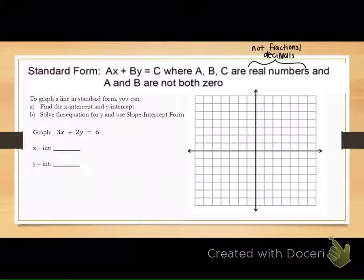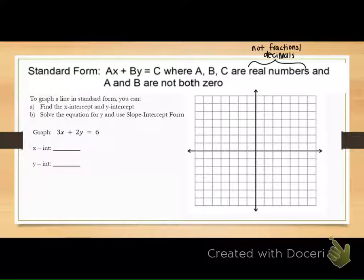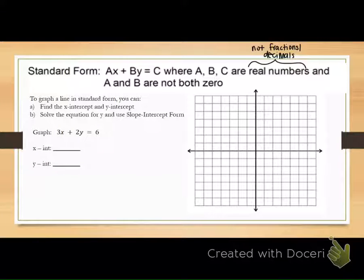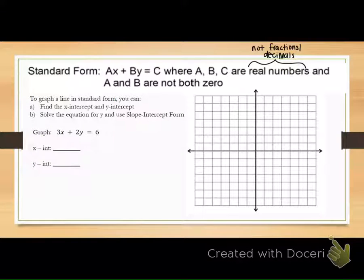So, graphing from standard form. If you are in ax plus by equals c form, here's what you can do: you can find the x-intercept and the y-intercept, or you can solve the equation for y and use slope-intercept form. Those are your two options. We can always put it into slope-intercept form. Sometimes there are advantages of using point-slope form over slope-intercept form, like when there are fractions.